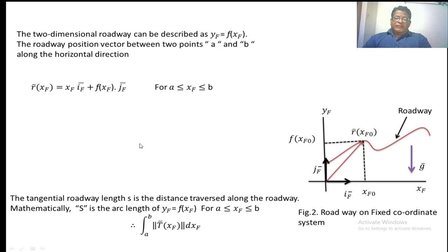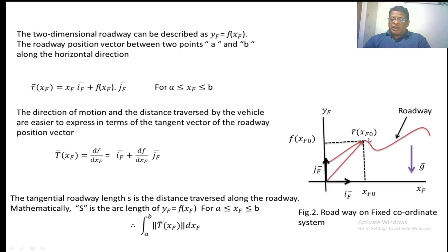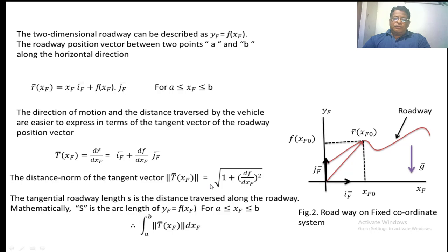Now we are going to find out the tangent of this vector. The distance travelled by the vehicle is easier to express in terms of a tangential vector of the road position vector. That is why we are finding the tangent to this vector, which is nothing but the derivative of this vector. So, t bar of xf equals dr bar by dxf, which is equal to if bar plus df by dxf times jf bar. The tangential roadway length s is the distance travelled along the roadway, represented as arc length. It can be calculated as the integral from a to b of the modulus of t bar of xf dxf, which is the magnitude of the tangential vector.